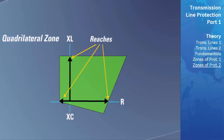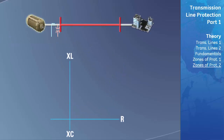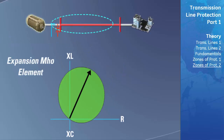Some advanced distance relays have added features to the Mho circle characteristic to increase security and reliability for faults that occur very close to the point of measurement, which is at the beginning of the transmission line. This point of measurement is shown at the origin of the RX diagram. On faults that occur very close to the point where the currents and voltages are being measured, some relays may have difficulty distinguishing whether the fault is inside or outside their zone of protection. To overcome this difficulty, the relay can change the size of the Mho circle when the calculated impedance is very near the origin. This is sometimes referred to as an enhanced Mho element.